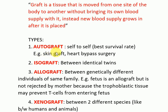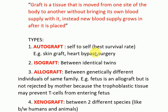There are types of grafts. The first is the autograft, which is self to self — it has the best survival rate. Examples include skin grafting from one area of the body to another, and heart bypass surgery where an artery is taken from one part of the body and placed in the heart. This self-to-self graft has the best survival rate.